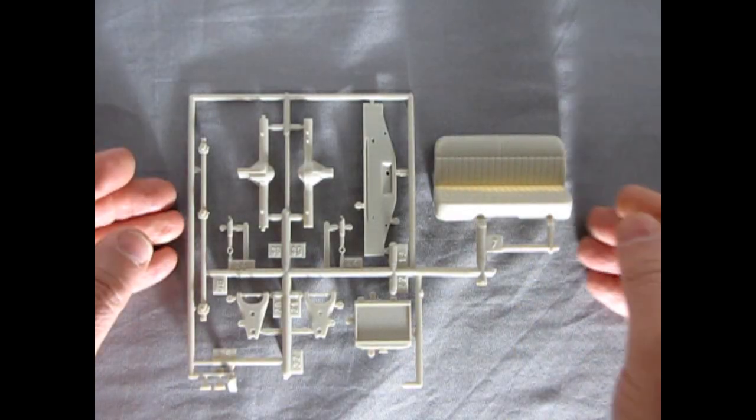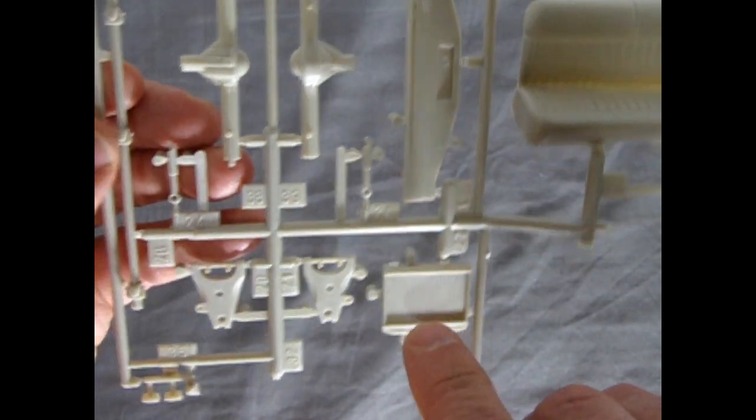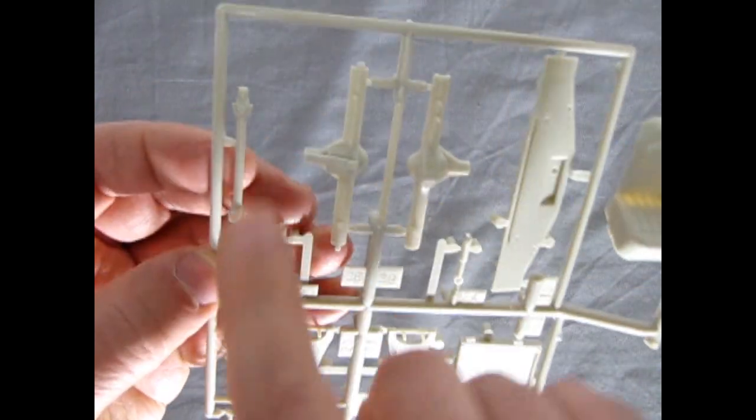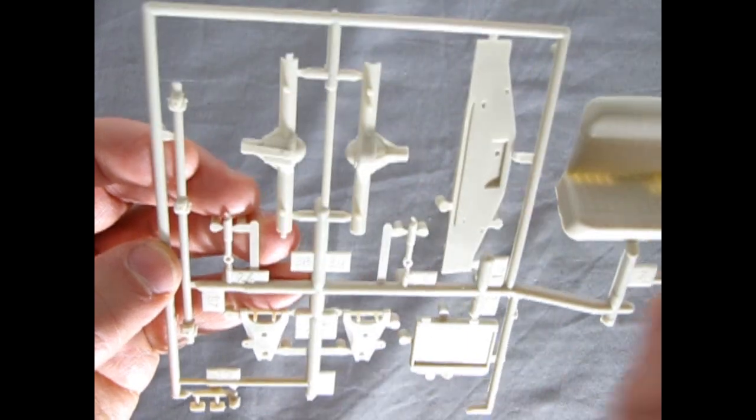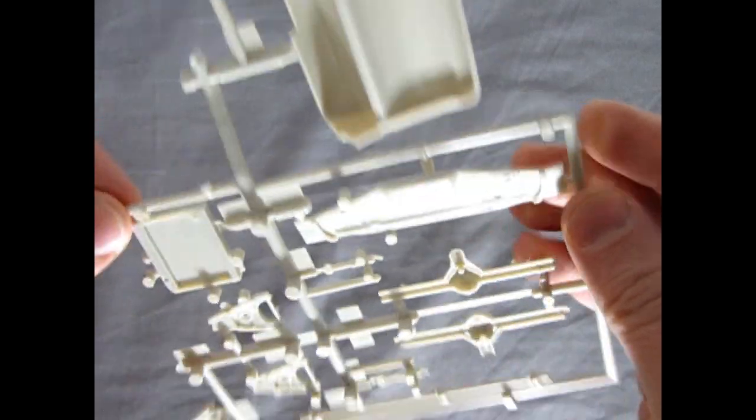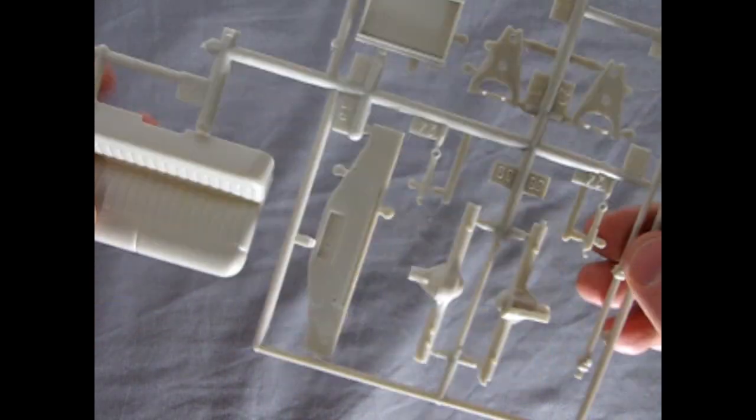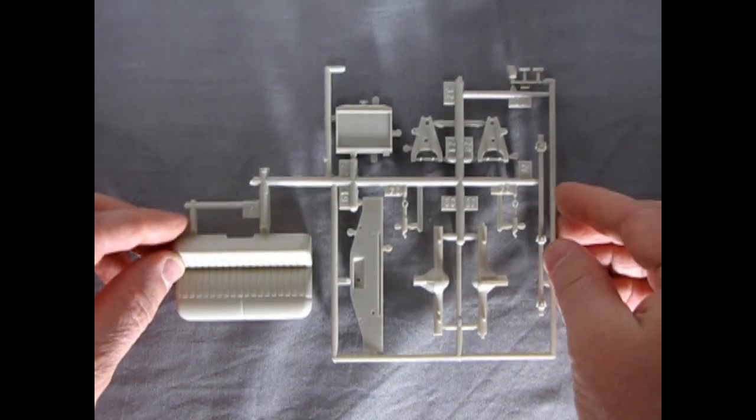Our final parts tree that is not chromed includes the front of our bench seat as well as our radiator, lower A arms, the drive shaft, the rear differential, shock absorbers, pedals, and this nice firewall here. And again all molded very, very well. Excellent work on the behalf of Mobius models.